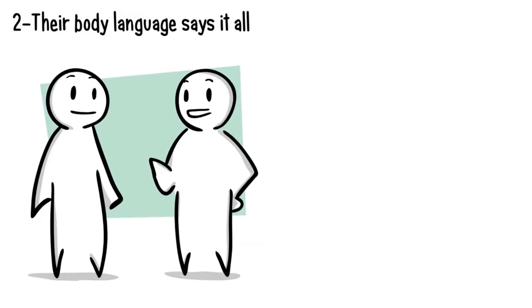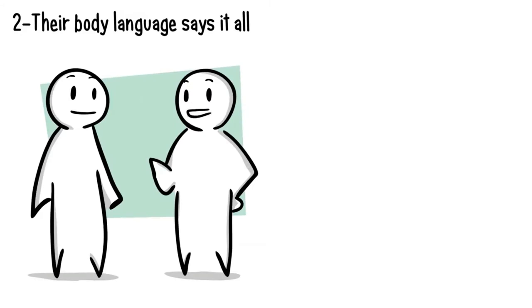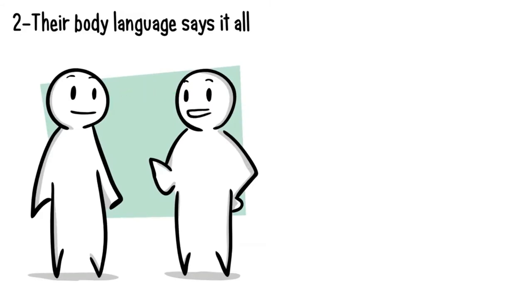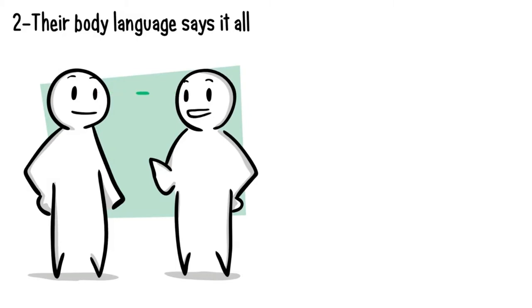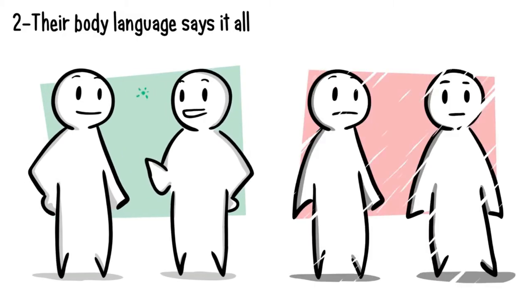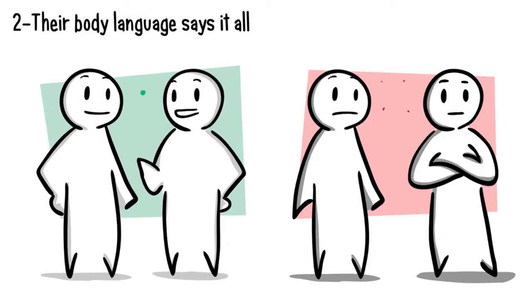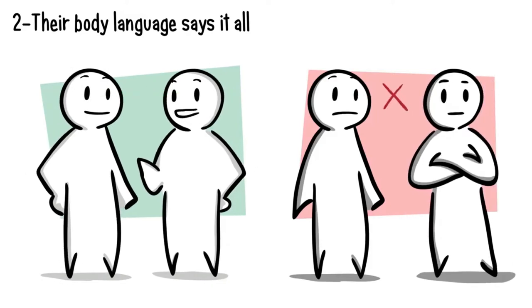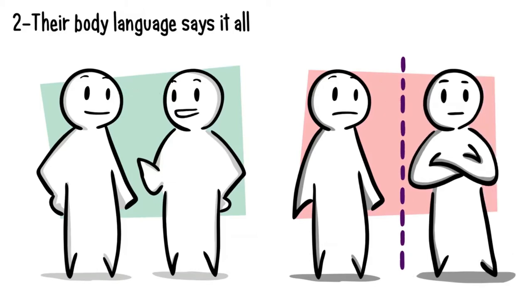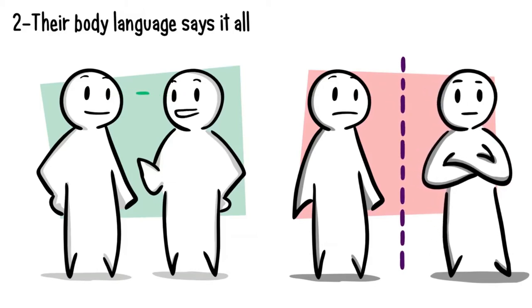Number two, their body language says it all. When we like someone, we have a tendency to make eye contact, mirror their body language, and lean in closer. But when someone dislikes you, they will avoid eye contact, cross their arms, and lean away from you. They do this in order to protect themselves from you, creating an invisible barrier that keeps you out. Harsh, right? But it's a common defense mechanism humans use.